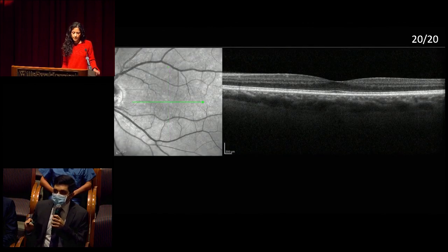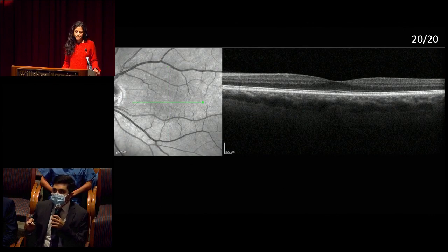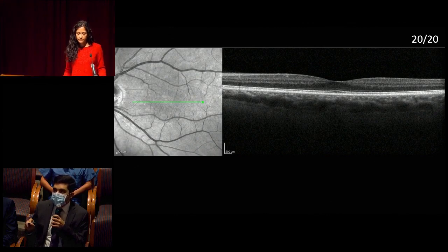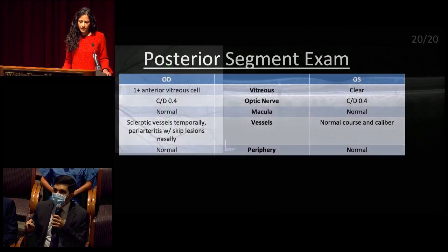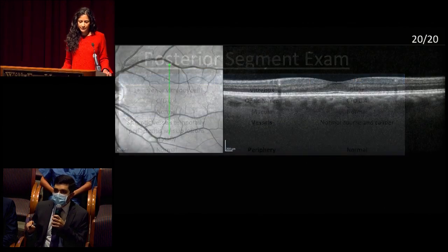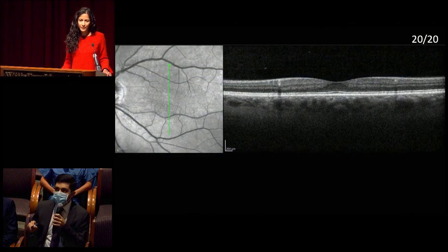Horizontal raster OCT of the left macula: vitreous is optically clear, choroid has normal thickness and appearance, and retinal laminations appear normal. Vertical cut — same, normal.